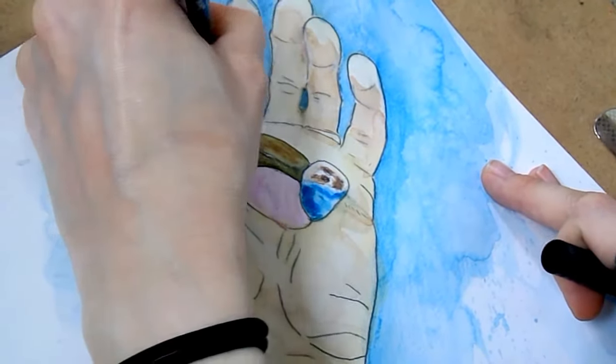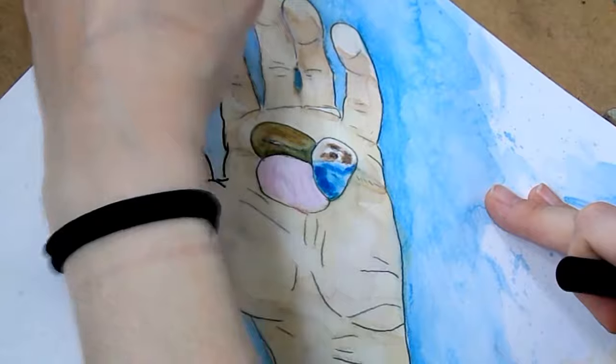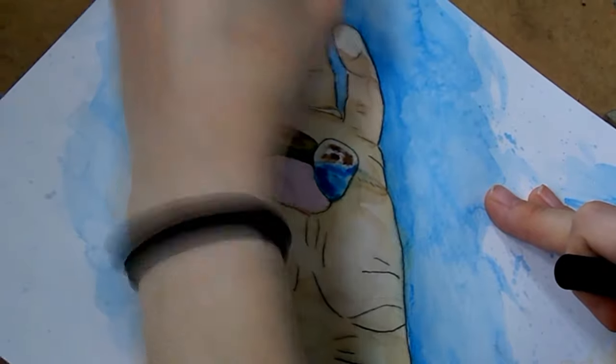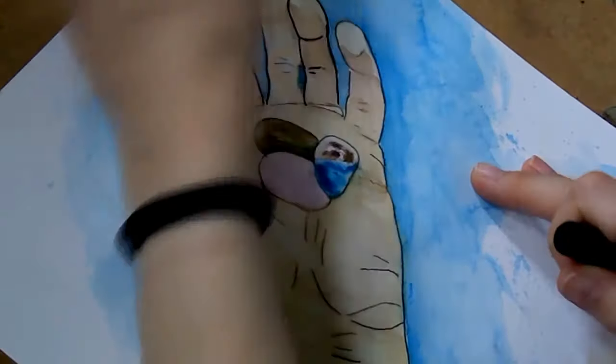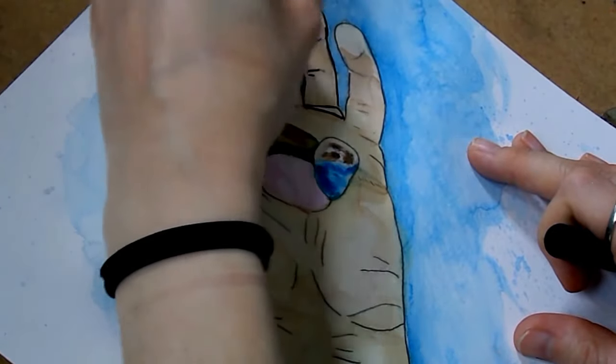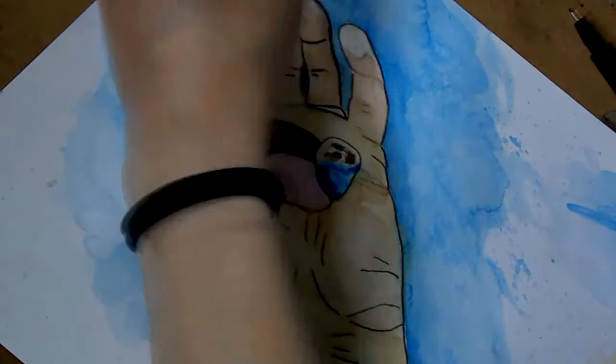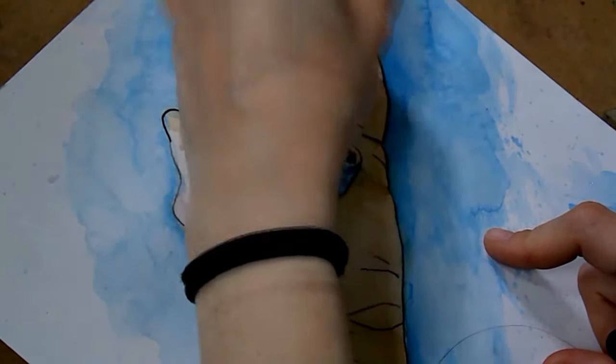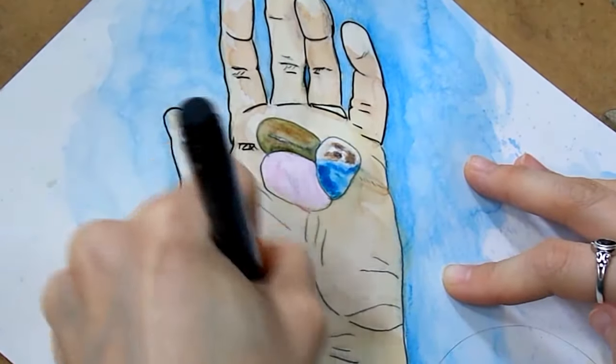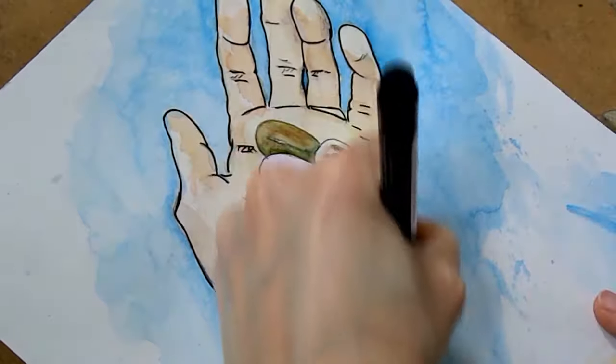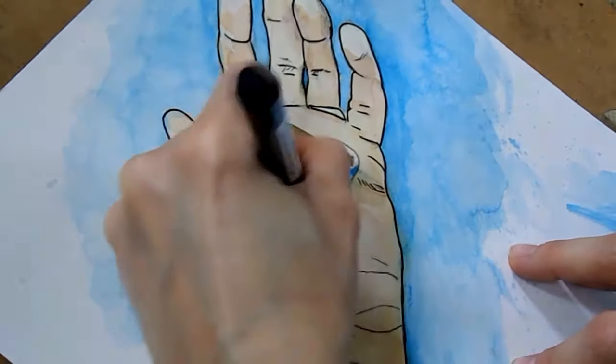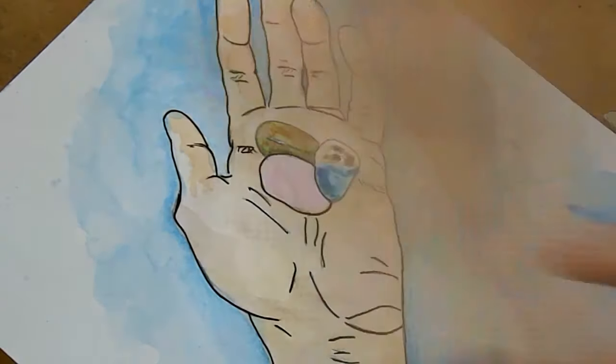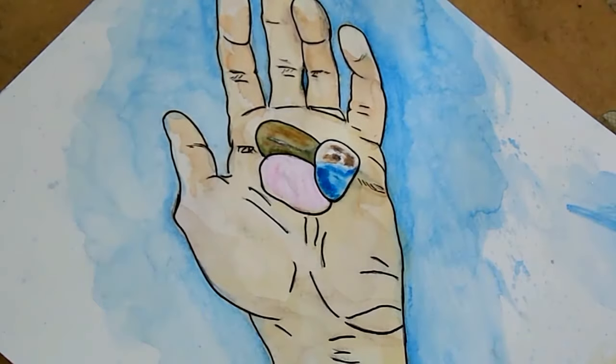So now I'm using my Faber-Castell Pit Pen, I think it's size F, to do all the outlining to give it that graphic look. And it's basically just going over my regular outlining. I may clean things up a little bit. Or add a line here or there that wasn't initially there. Because I do have a reference photo, I actually took a photo of my own hand holding some stones that I have. So I go according to the lines that I see on the hand.